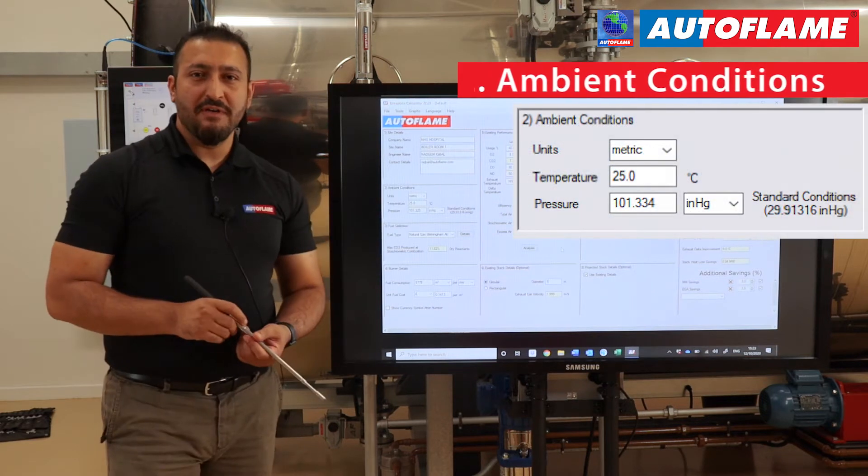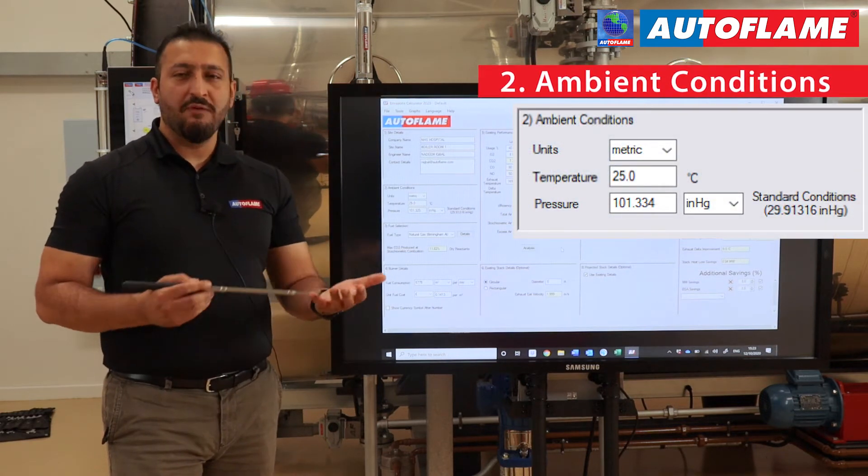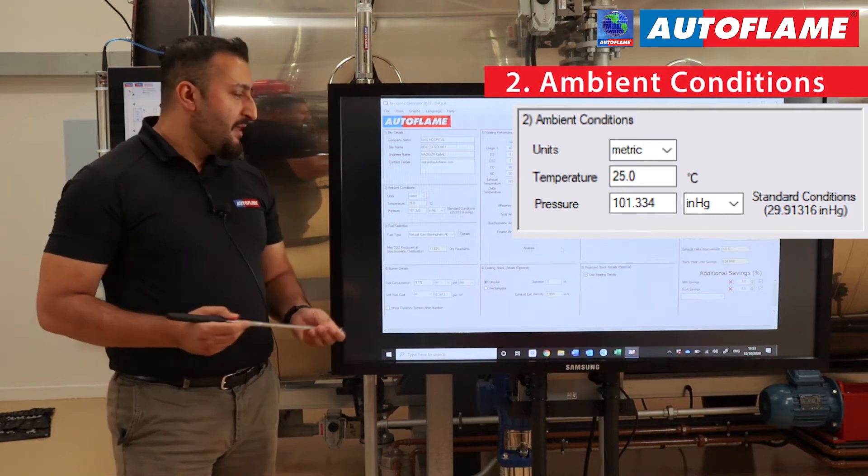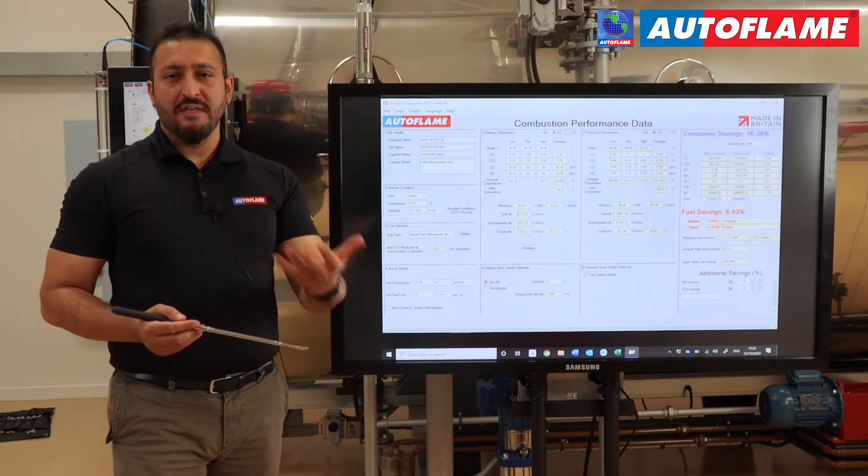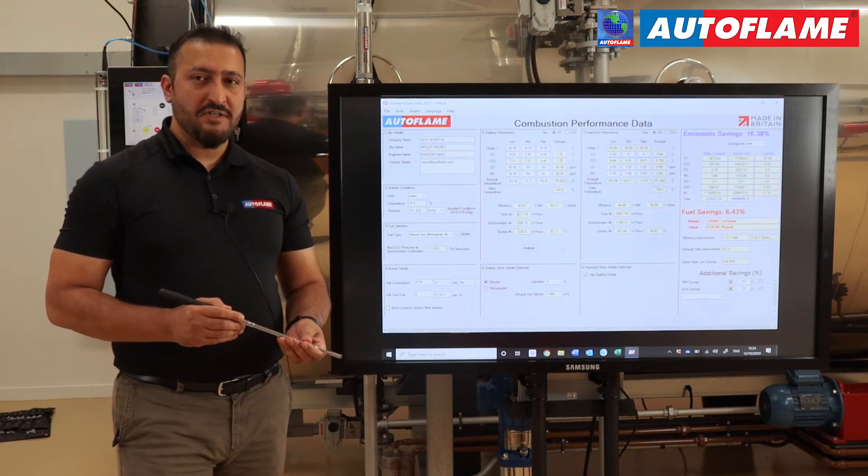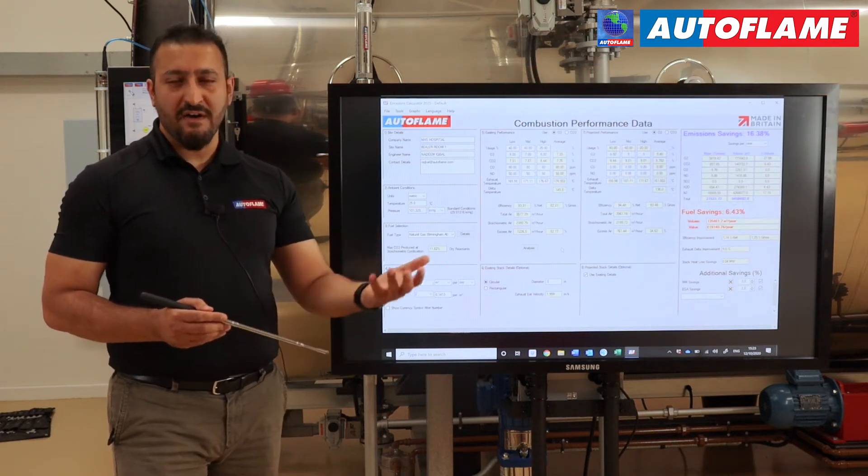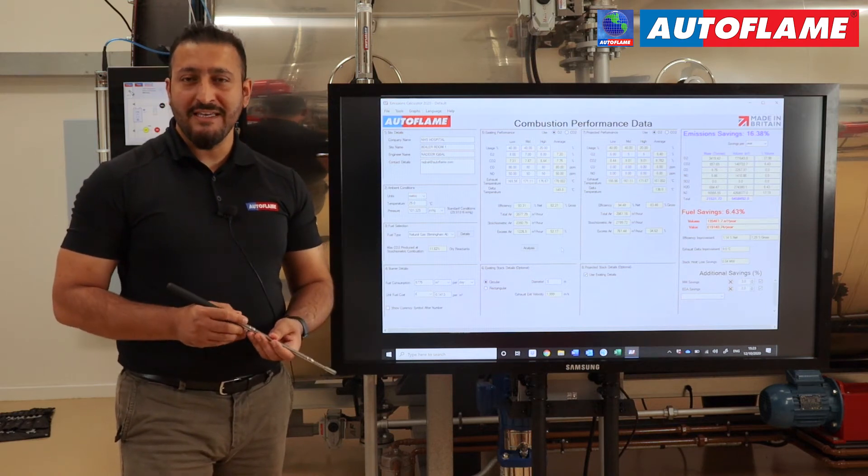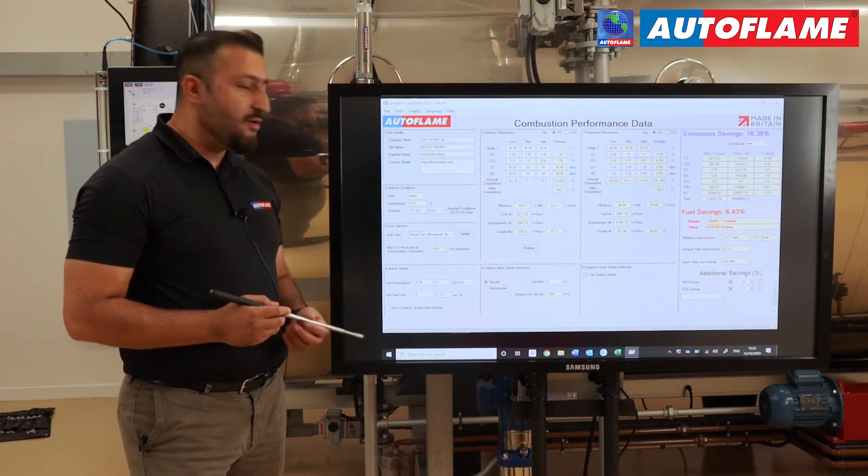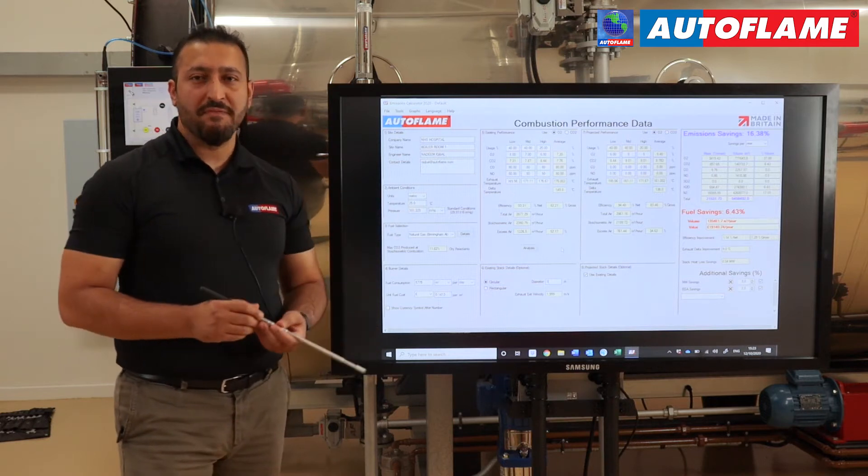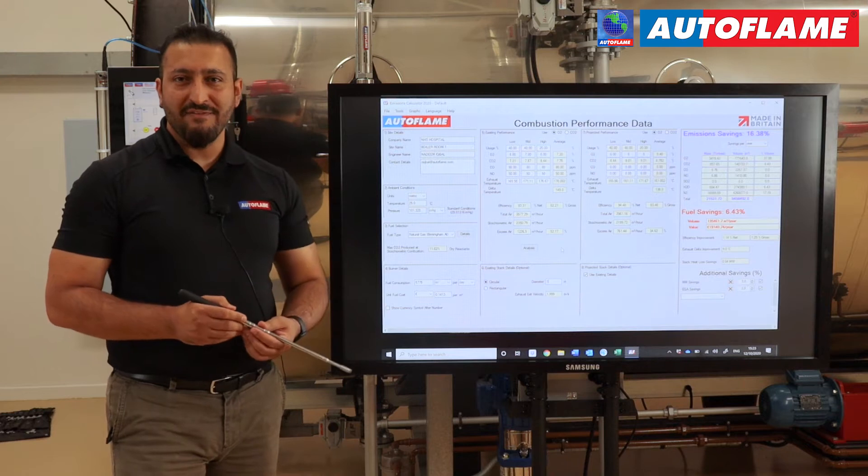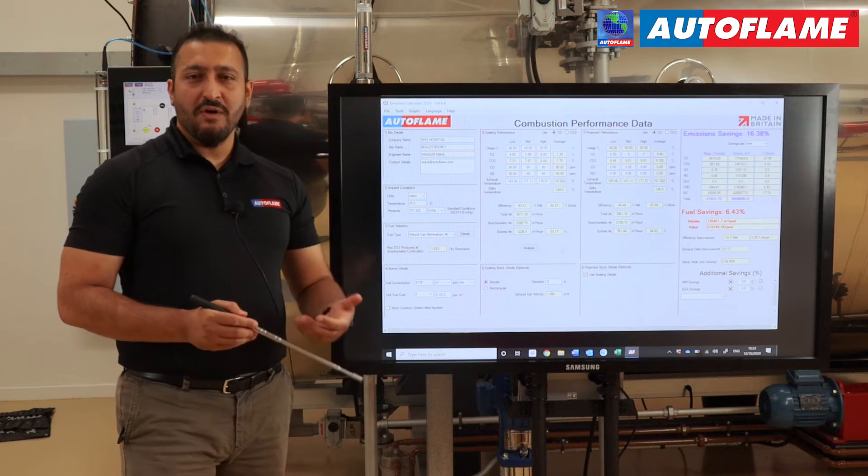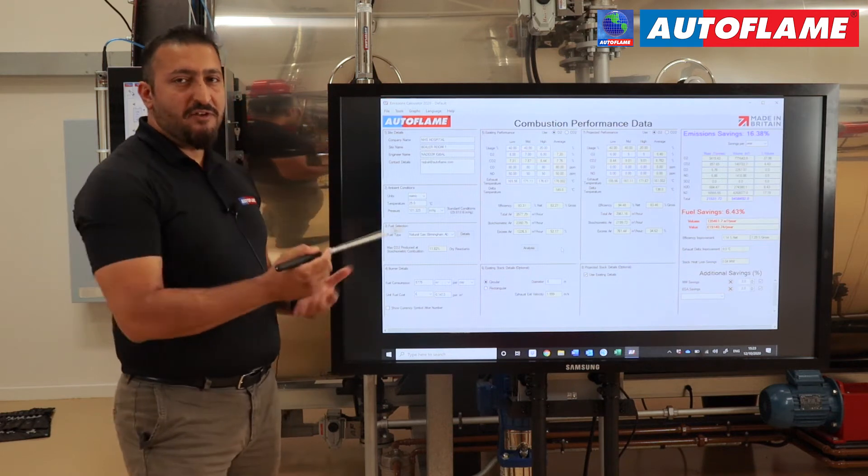Section two, that's where we put the ambient conditions. Are we measuring in imperial or metric units based on where you're located? Then we need the temperatures. Obviously your ambient temperatures can affect your combustion. The colder it is, the harder it is to make the savings. The warmer it is, the fuel and air mix is quite easy. So we need to know this information. Also your ambient pressures. If you are at sea level, then the ambient pressure will be taken as the standard 1.01. If you are on high altitudes, then this value will be slightly lower.